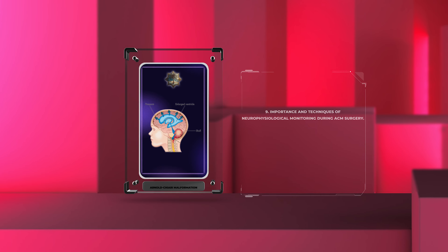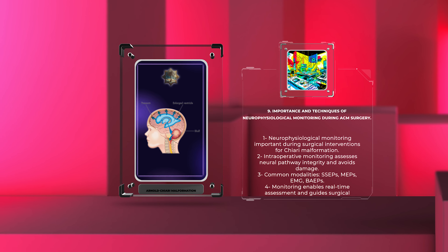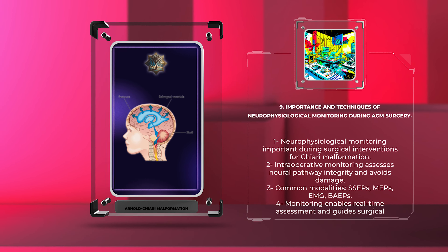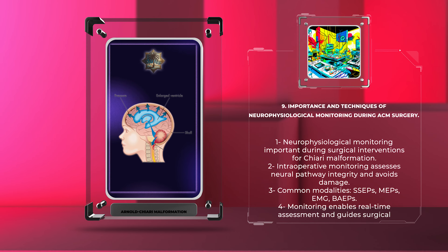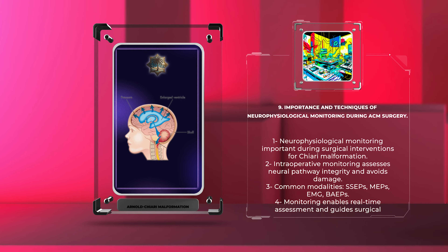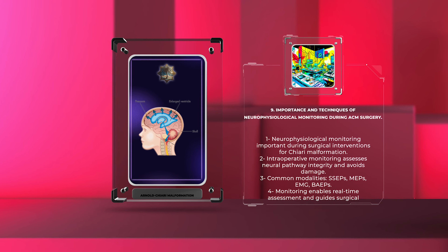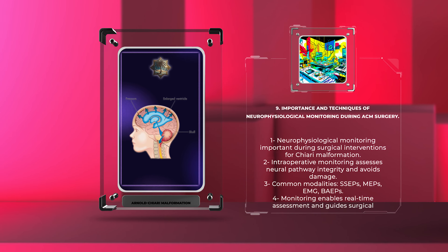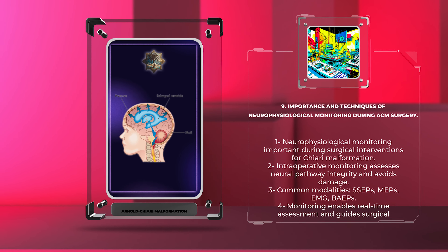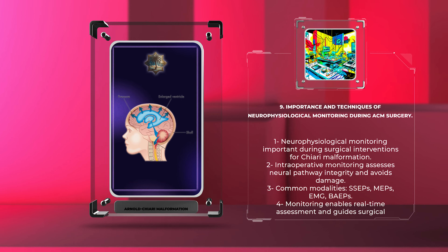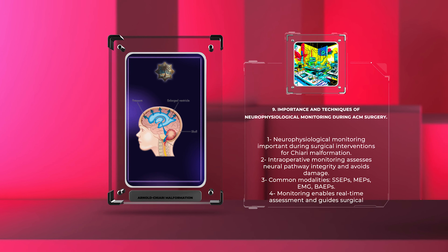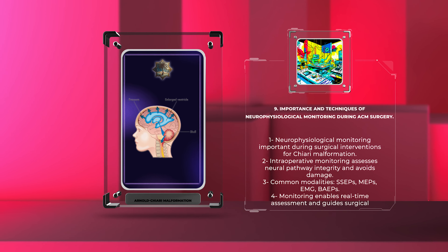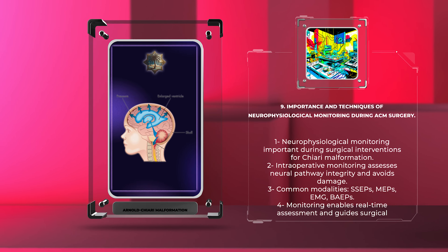Neurophysiological monitoring plays a pivotal role during surgical interventions for Chiari Malformation, especially in complex cases or those involving brainstem manipulation. Intraoperative monitoring techniques aim to assess the integrity of neural pathways and avoid iatrogenic damage. Commonly employed modalities include somatosensory evoked potentials (SSEPs), motor evoked potentials (MEPs), electromyography (EMG), and brainstem auditory evoked potentials (BAEPs). These tools enable real-time assessment of neural function, and early detection of changes in neurophysiological parameters allows for prompt intervention to minimize the risk of permanent neurological deficits.